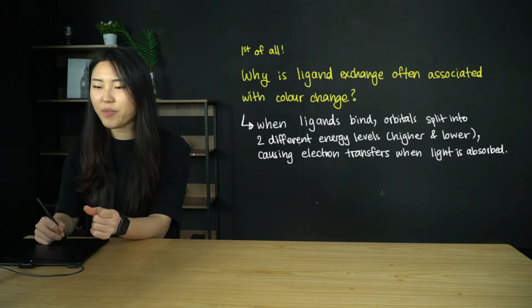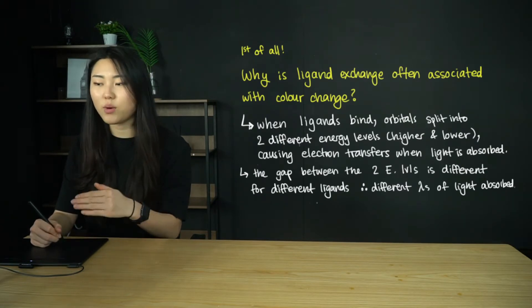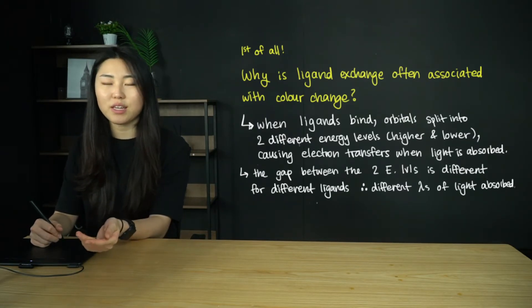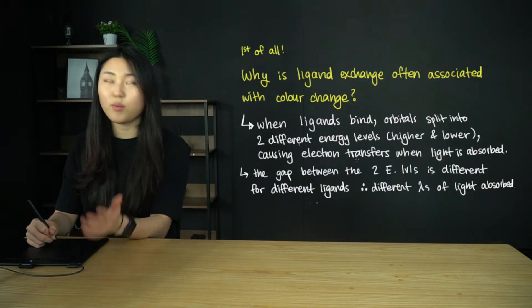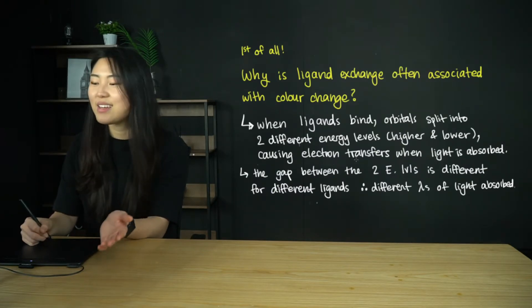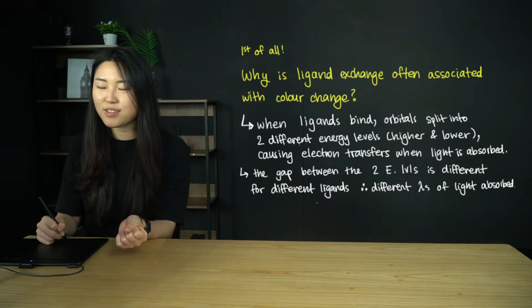The gap between the two energy levels, higher and lower, is going to be different for different ligands. Therefore, different wavelengths of light are going to be absorbed for different complexes. In this example, I have the copper 2+ ion.